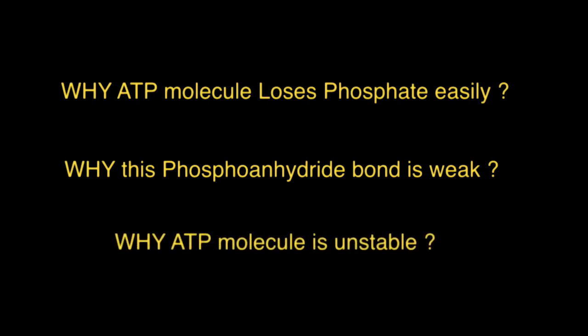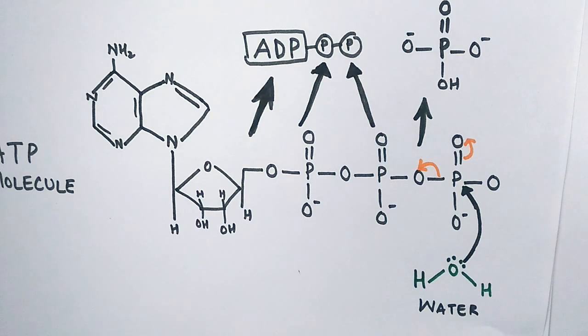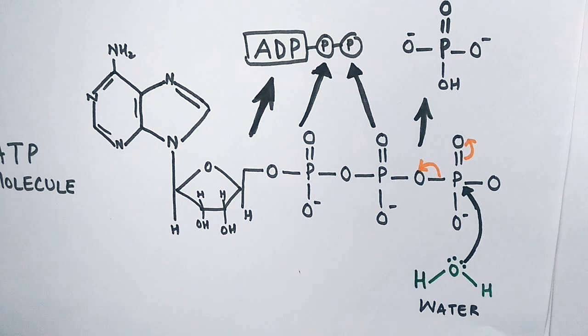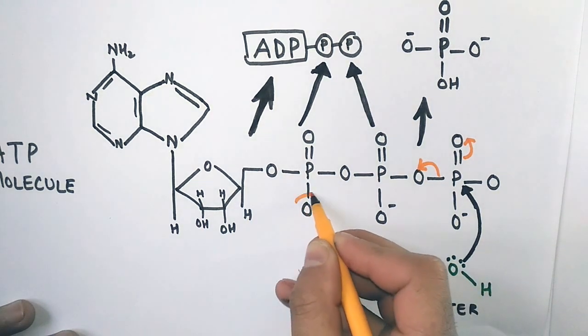In the ATP molecular structure, we see three phosphates linked in a linear order. On these individual phosphate groups linked to the ribose sugar, they have oxygen molecules with negative charge. All three oxygen molecules of phosphate groups have negative charge on them.